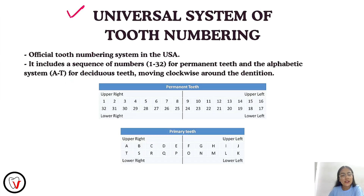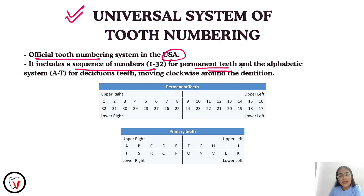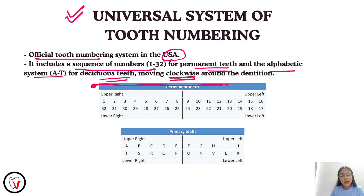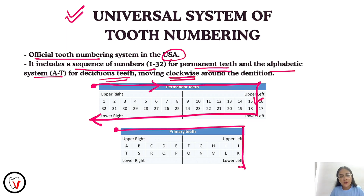Coming to the universal system of tooth numbering. This is the official tooth numbering system in the United States of America. It includes a sequence of numbers 1 to 32 for permanent teeth and an alphabetic system A to T for deciduous teeth, moving clockwise around the dentition. For permanent teeth, we start from the upper right all the way to the lower right. Likewise for the primary teeth. Notice that there is no repetition of numbers or alphabets in the universal system.